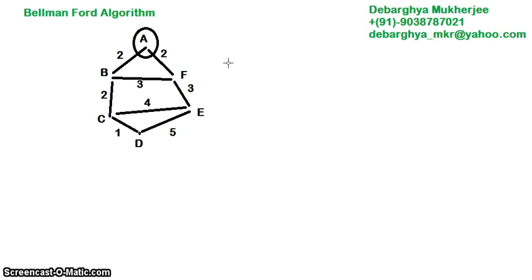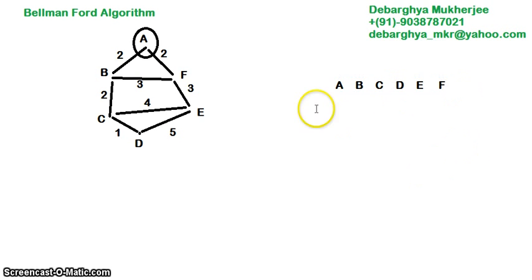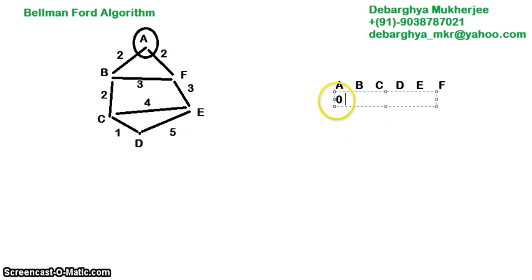If we consider this starting vertex A, I am writing the table with columns A, B, C, D, and the other vertices. In the first iteration, to go from A to A it is 0. Every other node is still to be discovered, so I am writing N (infinity) for all other vertices.